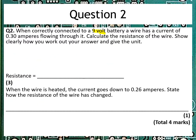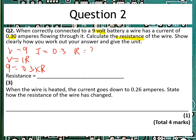Here we know the voltage, we know the current, and we're being asked to find out the resistance of the wire. So again, we're going to jot down what we know: V is equal to 9, current I is equal to 0.3, and we're trying to find R. So we're going to use V equals IR. Put the numbers in: 9 is equal to 0.3 multiplied by R. We reverse the maths — the 0.3 goes underneath the 9. That gives us resistance equal to 9 divided by 0.3, which is equal to 30. We mustn't forget the units: the units are in ohms.